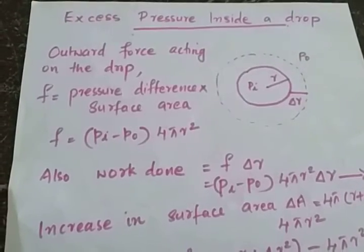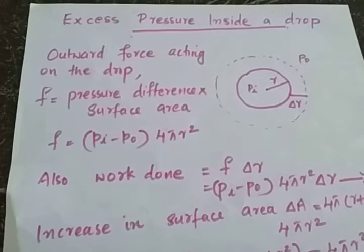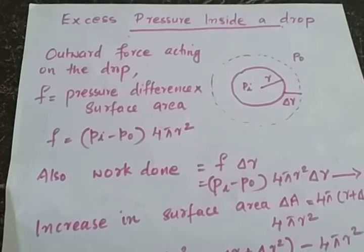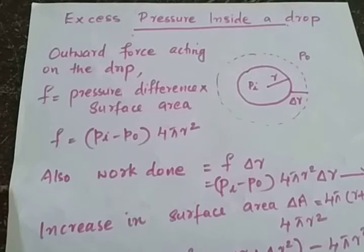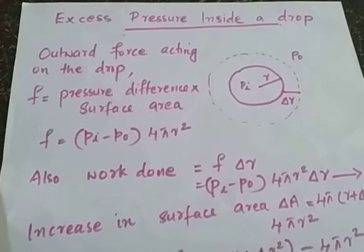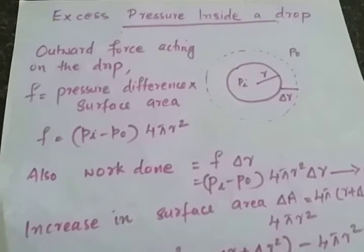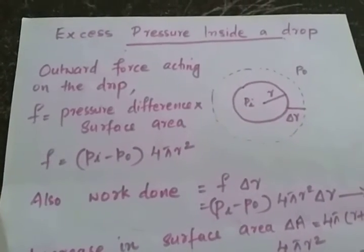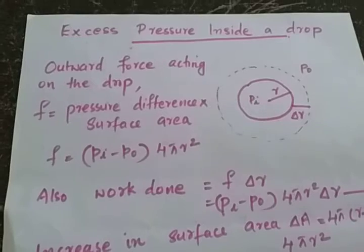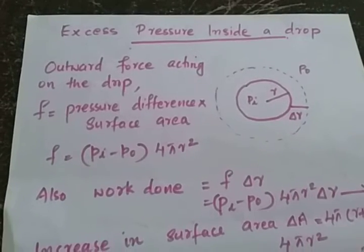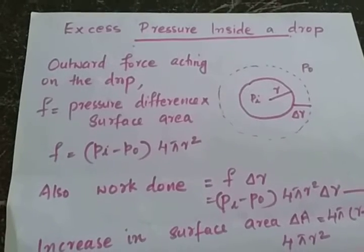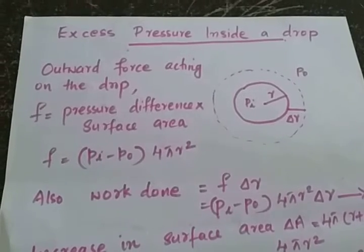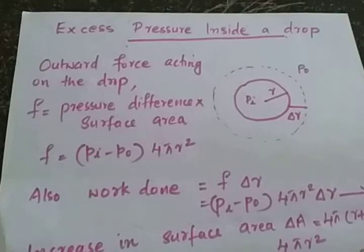the pressure inside the liquid is greater than the outside. And due to surface tension, the liquid surface always tends to have a minimum surface area. For a given volume, a sphere has a minimum surface area. So hence, liquids tend to assume a spherical shape. Small drops and bubbles of the liquid assume spherical shape because when it assumes a spherical shape, area is minimum. For bigger drops, the effect of gravity predominates over the surface tension and the drop gets flattened. So smaller drops or small bubbles always tend to assume a spherical shape because of surface tension.